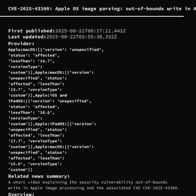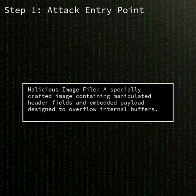Today on the CyberSecure podcast we cover CVE 2025-43300, a zero-day vulnerability in Apple's image processing libraries actively exploited in highly sophisticated attacks. Apple has released emergency security updates for iOS, iPadOS, and multiple versions of macOS to remediate an out-of-bounds write issue that can lead to memory corruption when handling a malicious image file. If you use Apple devices, this is one vulnerability you'll want to address immediately.